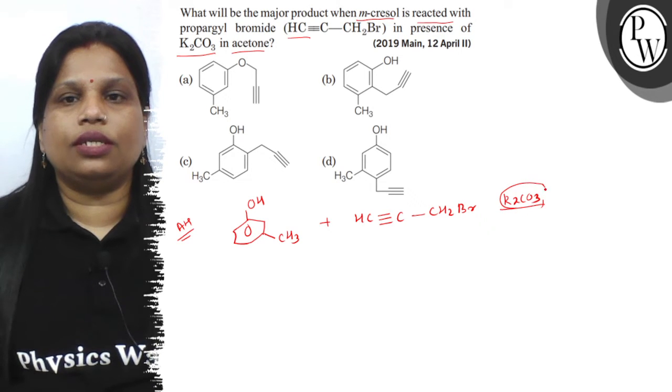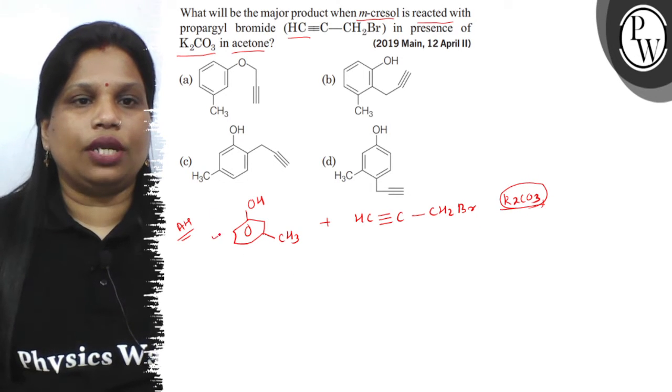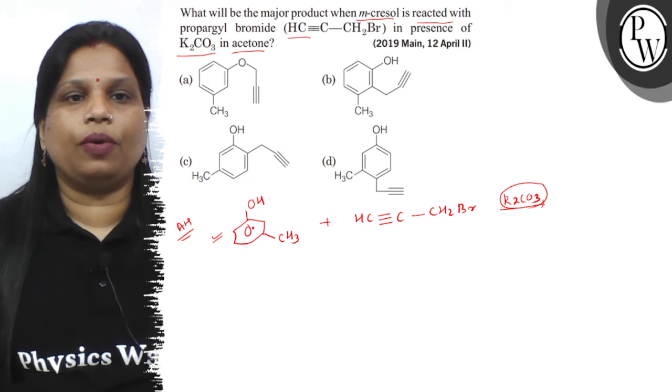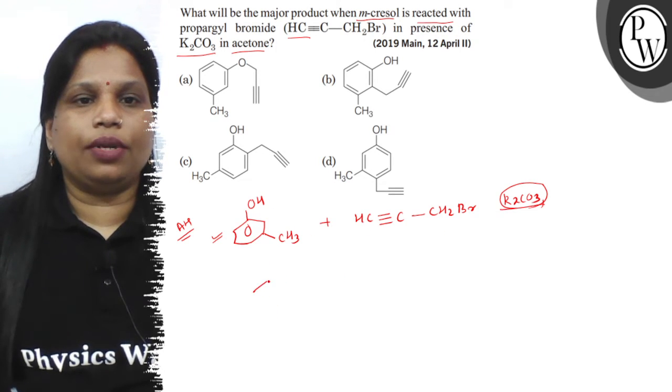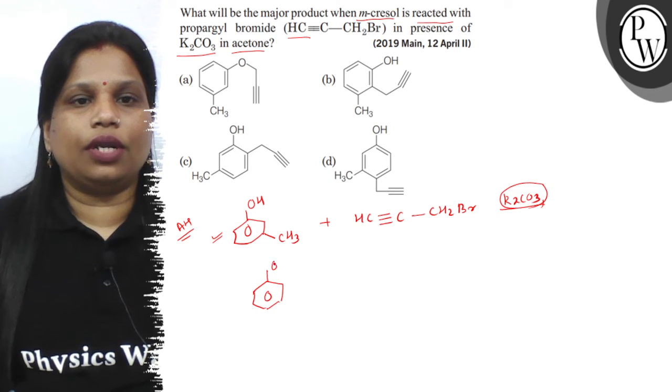Potassium carbonate is a base and this is a phenolic compound. And phenolic compound, it is acidic in nature. In presence of base what will happen, it will form the phenoxide ion.